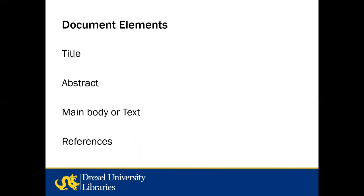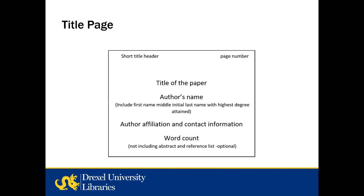AMA style has standard document elements: the title, the abstract, the main body or text, and references. Some publishers require a title page. The AMA Manual doesn't specify font size or font type for title pages, but offers content recommendations. Typically you include the title of the paper, followed by the author's name with their complete name and highest degree listed, or however the publisher specifies.